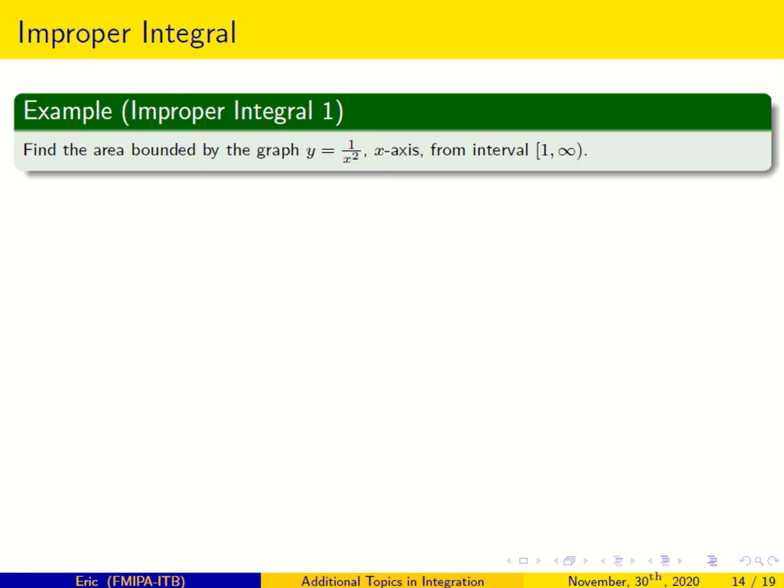This is the first example on improper integrals. We would like to find the area bounded by the graph y equals 1 over x squared, the x-axis, and from interval 1 until infinity. This is an improper integral because the boundary is not bounded — the interval goes to infinity.